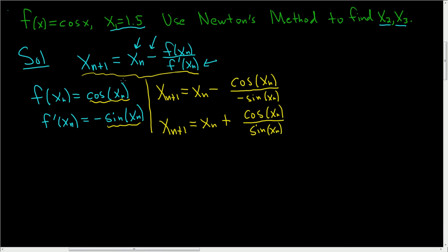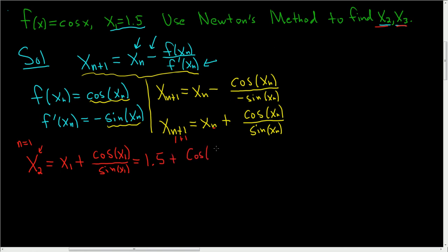We have the formula — all we have to do now is find x₂ and x₃. So x₂: here n is equal to 1, and 1 plus 1 is 2, that's how we get x₂. So we get x₁ plus cosine of x₁ over sine of x₁. And x₁ was 1.5, so this is 1.5 plus cosine 1.5 over sine of 1.5. Just replacing all the x₁s with 1.5. If you put this in your calculator, make sure it's in radians — you end up with 1.5709. I'm using four decimal places throughout this video. So that's x₂.